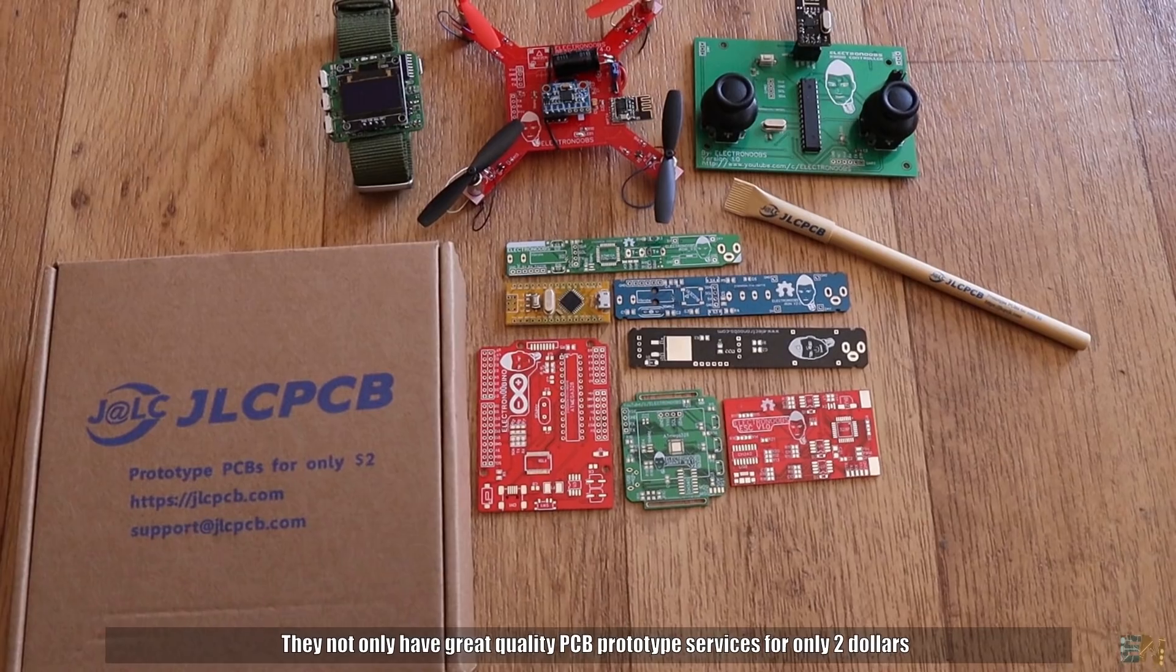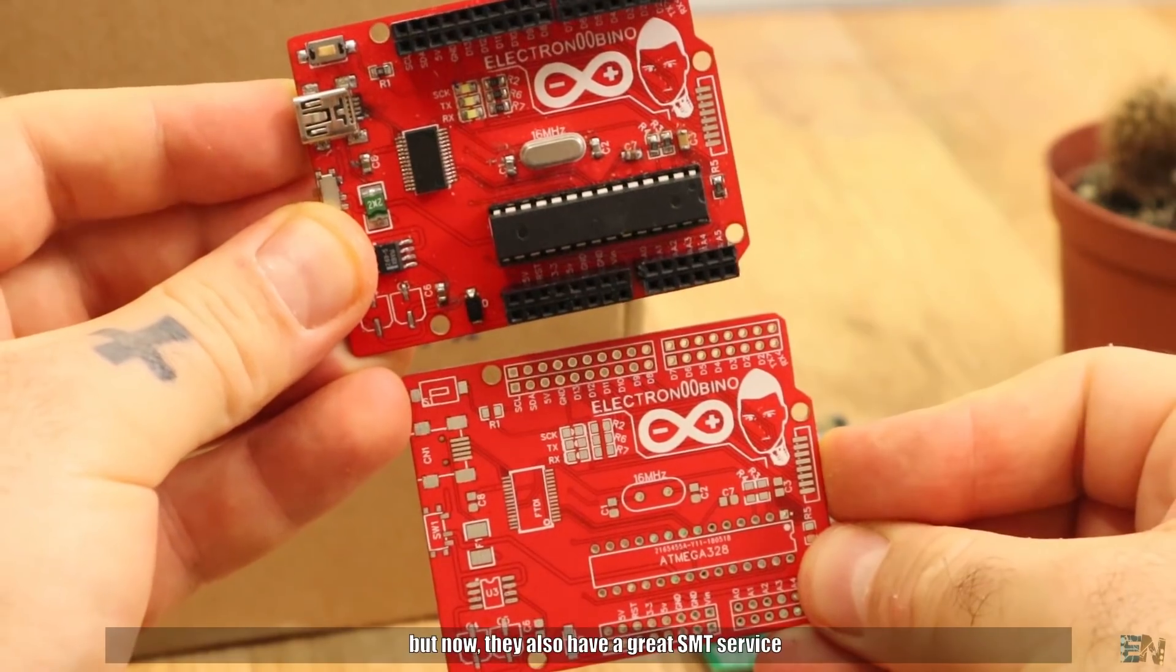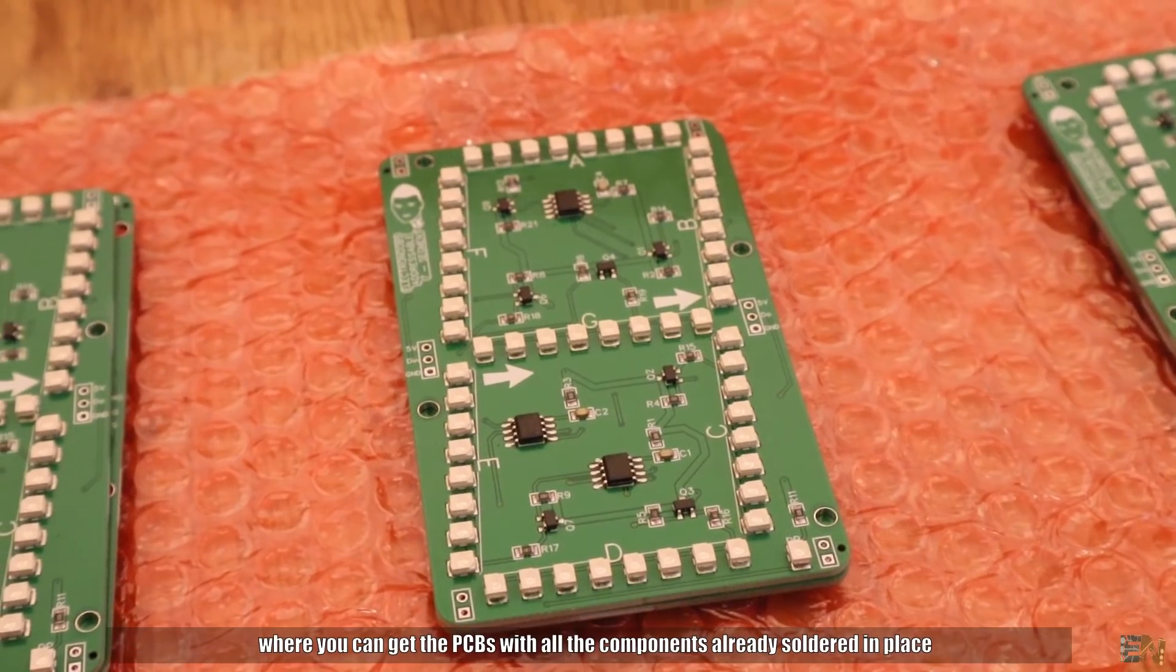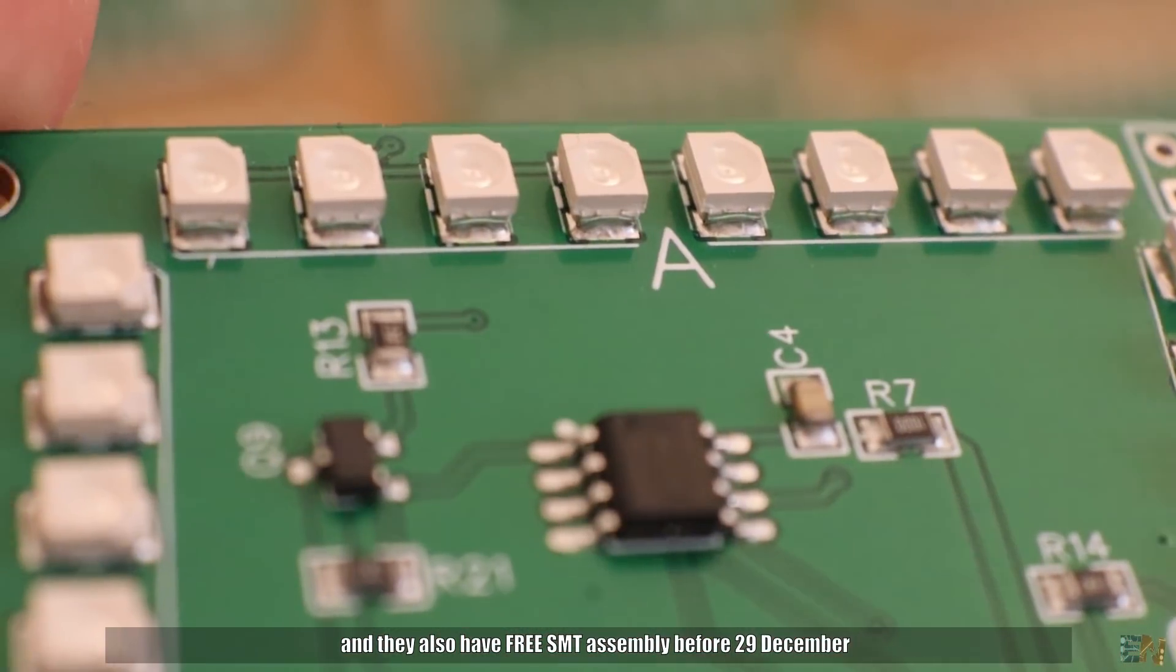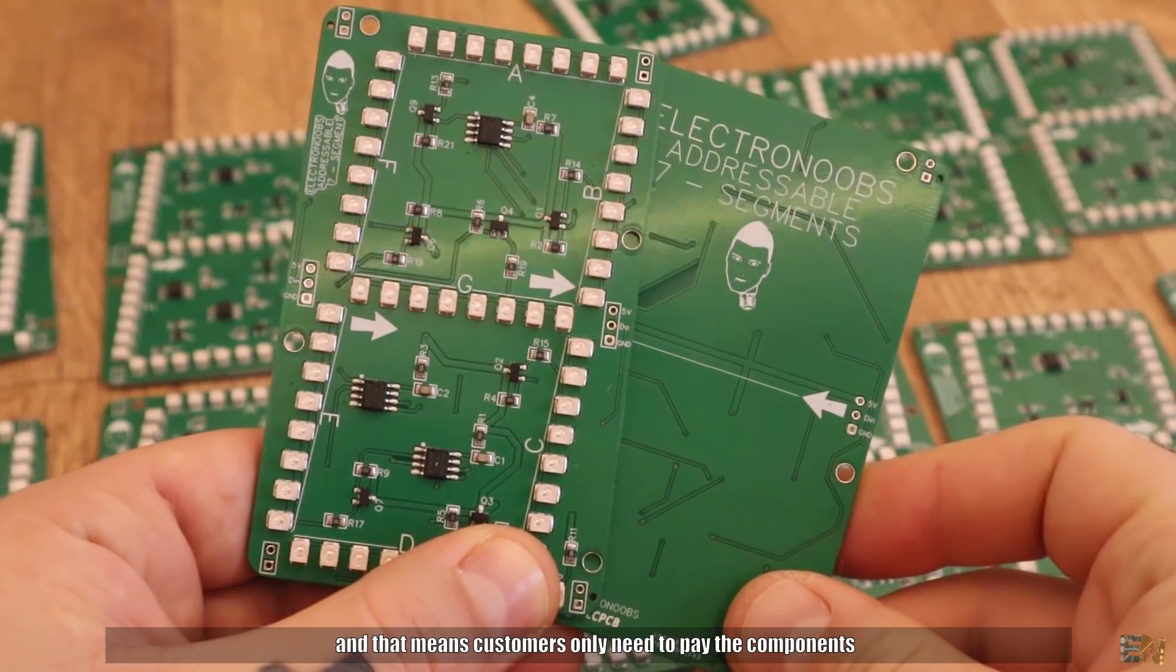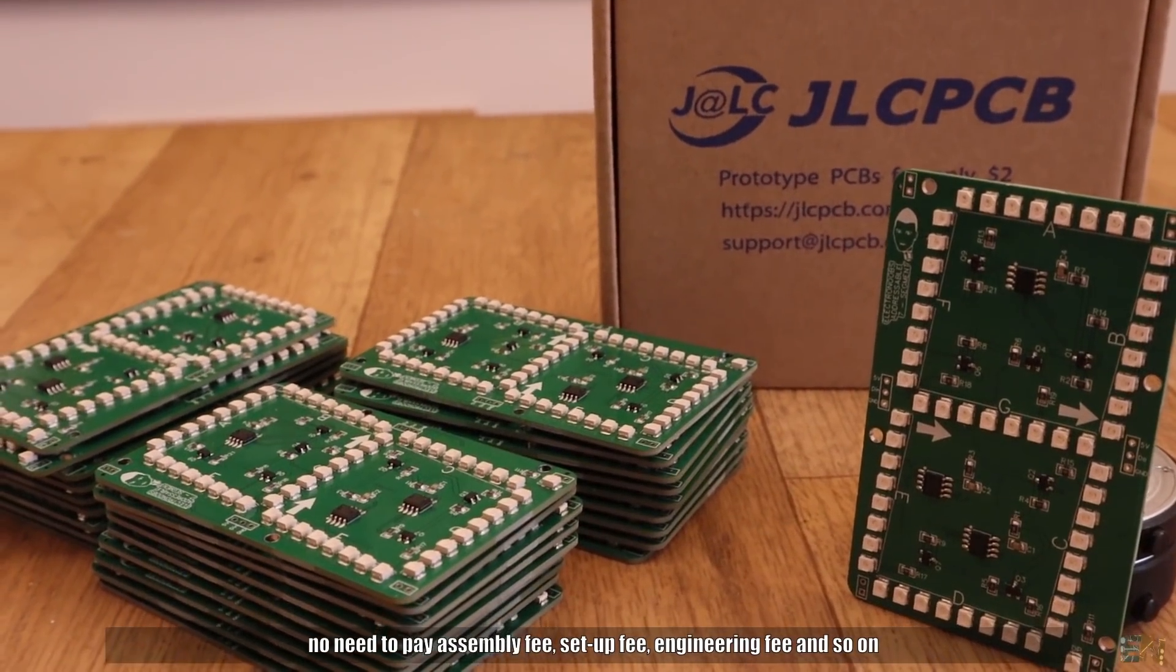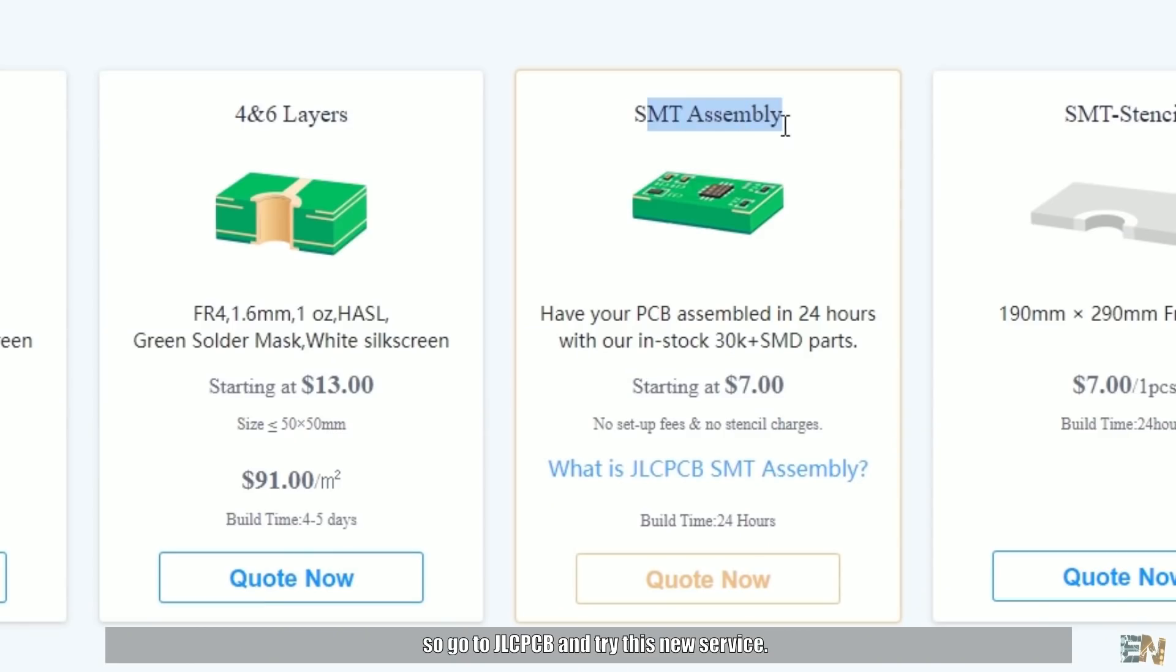JLCPCB offers a great quality PCB prototype service for only $2, but now they also have a great SMT service, where you can get the PCBs with all the components already soldered in place. And they also have free SMT assembly before 29th December and that means that the customer only needs to pay the components. No need to pay assembly fees, setup fees, engineering and so on, so go to jlcpcb.com and try this new service.